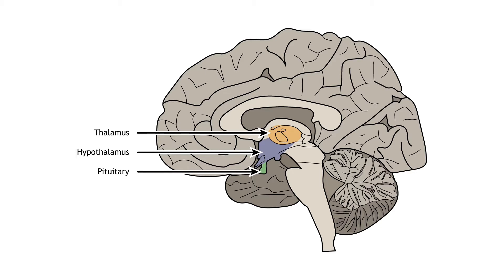The hypothalamic regulation of the body's response to stress is managed via hormone release by the pituitary gland. The pituitary gland is located inferior to the hypothalamus. The pituitary is divided into two lobes, the anterior and posterior pituitary. These regions are responsible for the release of different hormones and are controlled by the hypothalamus in different ways.